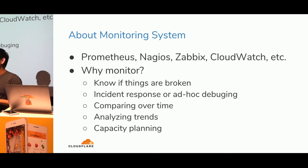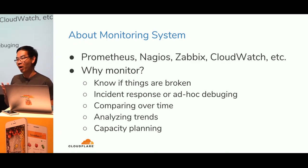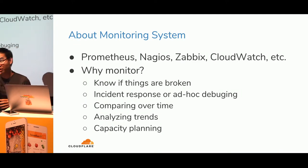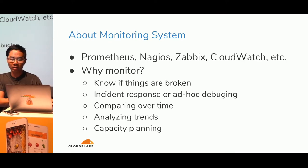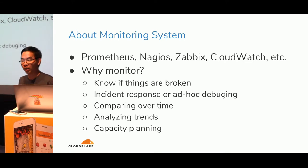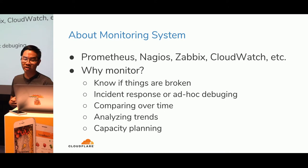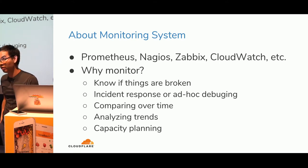There are a lot of monitoring systems. Why do we monitor stuff? We monitor precisely so that we know when things are broken. If you're not monitoring, you don't really know if it works or not — you're practically flying blind. You can also use monitoring for incident response, ad hoc debugging, comparing performance across software versions, analyzing trends, and capacity planning. Those are the main reasons we need monitoring.